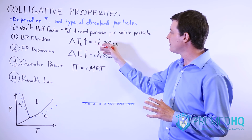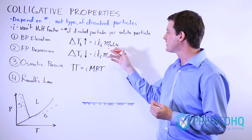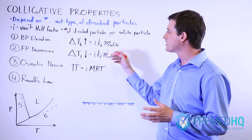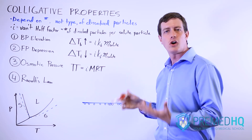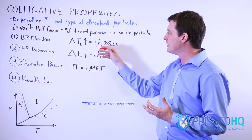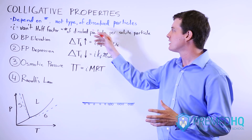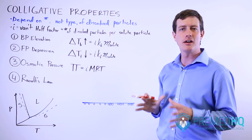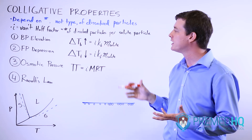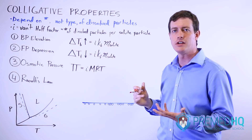The boiling point elevation formula involves the Van't Hoff factor times the boiling point elevation constant Kb times the molality of the solute. Notice that this constant is a property of the solvent. If you're dissolving in water, the water has its own Kb. It doesn't depend on the type of particle dissolved — it's a quality of the water itself. Any other liquid will have its own Kb.